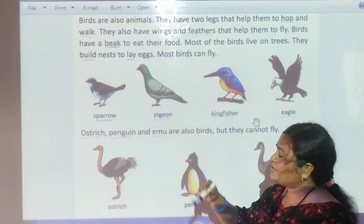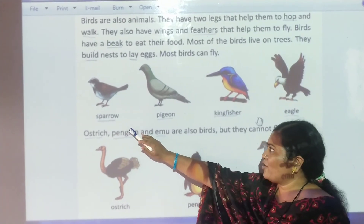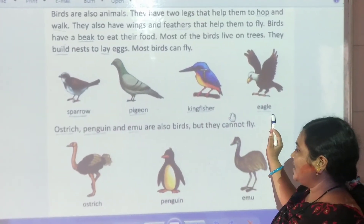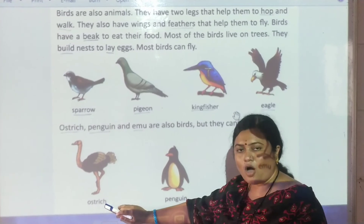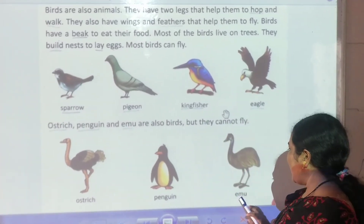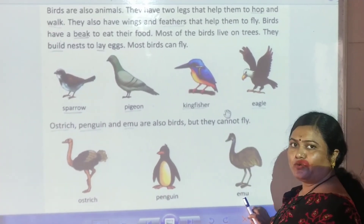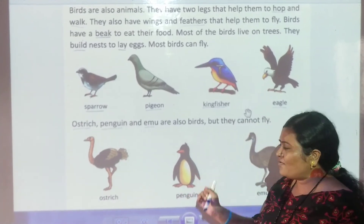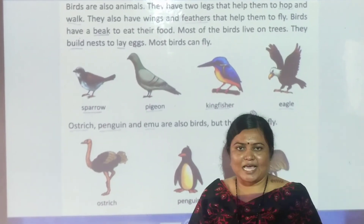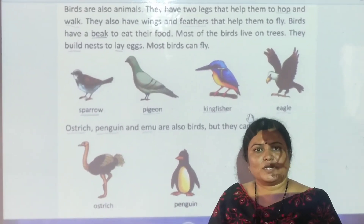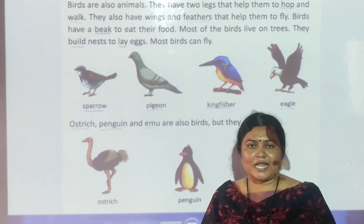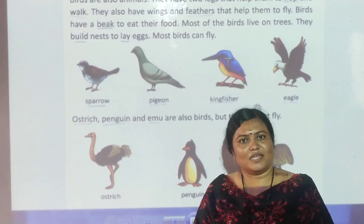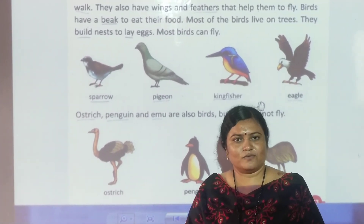So our today's new words are: sparrow, pigeon, kingfisher, eagle, ostrich, penguin, and emu. Children, write down all new words in your science notebook. This is your today's homework and the remaining part of our chapter we will learn in the next video. Thank you.